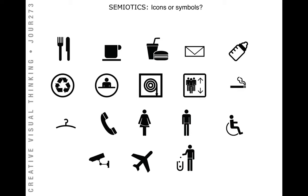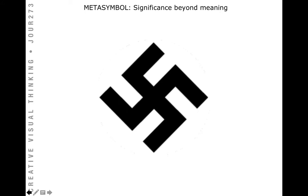How do symbols change over time? We can apply that to the Confederate flag and how it has been reconstructed into a new meaning by neo-Nazi groups and white supremacists.